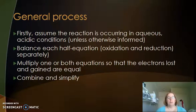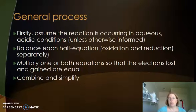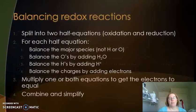We balance each half equation separately, and then you may need to multiply one or other half equation so that the electrons lost and the electrons gained are equal, and then you combine your two half equations and simplify.